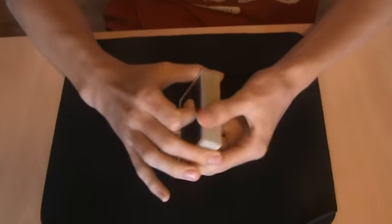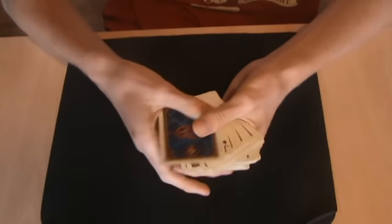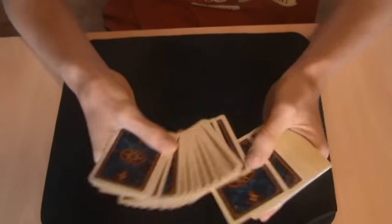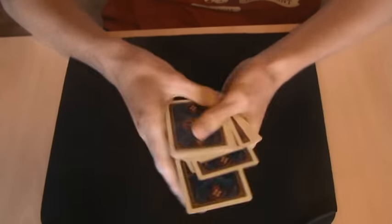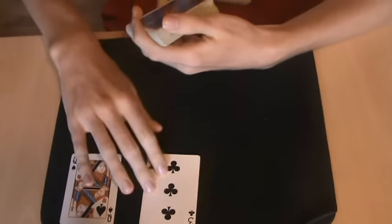All right, now, what you want to do is you have two spectators select two cards. Make sure you don't select one of the top four. Two cards and there you go. We have the three and the queen.